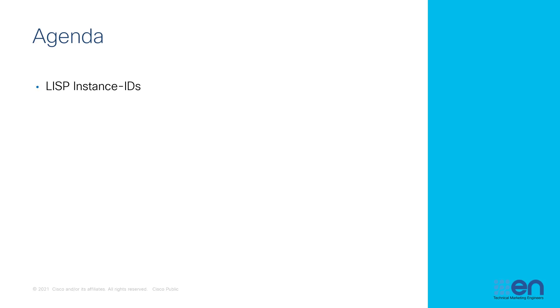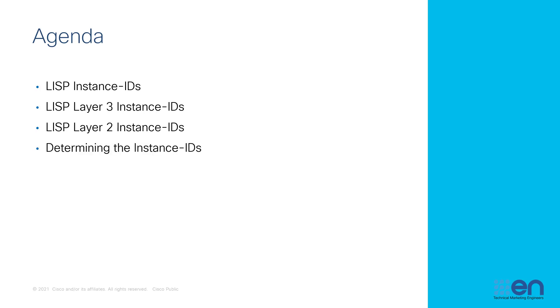Here's the agenda for this video. We'll begin by introducing LISP Instance IDs, what they accomplish, and how they are used. Next is a discussion specific to LISP Layer 3 Instance IDs, and then LISP Layer 2 Instance IDs. Finally, I will show you how to use the CLI to determine the Instance ID. This will be useful for other videos on this channel and for general troubleshooting knowledge.